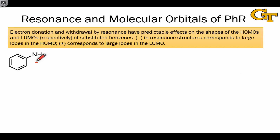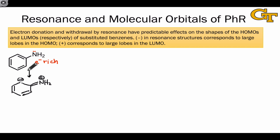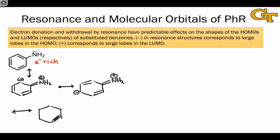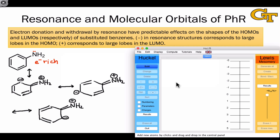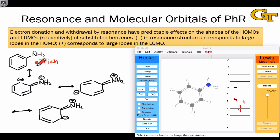Let's start with aniline, which is an electron rich benzene due to the presence of the strong electron donating NH2 group. I'm going to start by drawing three important resonance forms for aniline that engage the NH2 group as an electron donor. Now let's build this molecule in Hulis and examine the frontier molecular orbitals. Because this molecule is electron rich due to the presence of the amino group, we should expect it to be a stronger nucleophile than benzene, so it makes sense to focus on the highest occupied molecular orbital.